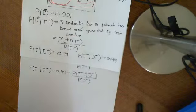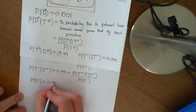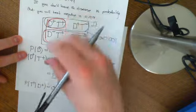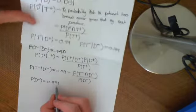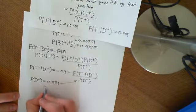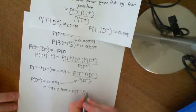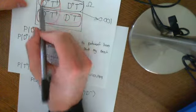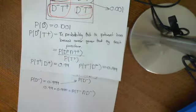We know what the probability that you are not diseased is — it's equal to 0.999, because the event that you are not diseased and the event that you are diseased partition the entire sample space. So if the diseased event has probability 0.001, the probability that you aren't diseased has probability 0.999. So we can put that in and get that 0.99 times 0.999 equals the probability that you test negative and don't have the disease.